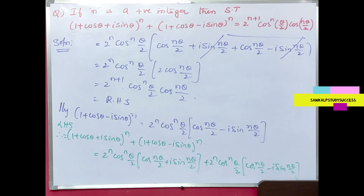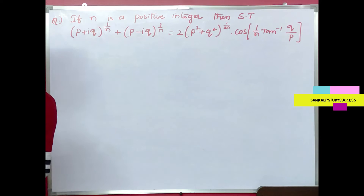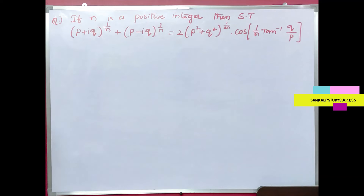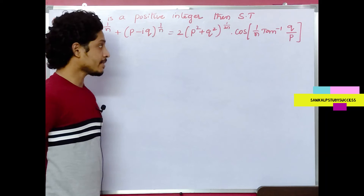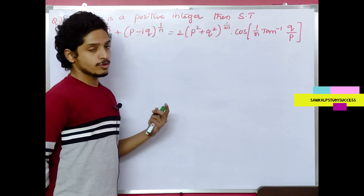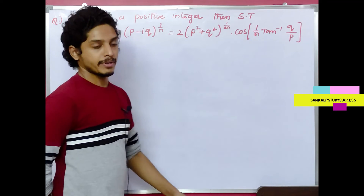Very, very important. Please note this. Let's see the next question. This is also a very, very important question for 7 marks. Many people will be using the IP paper. If n is a positive integer, show that (p + iq)^(1/n) + (p - iq)^(1/n) = 2(p² + q²)^(1/2n) · cos(1/n · tan⁻¹(q/p)).